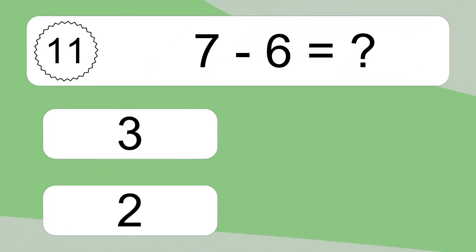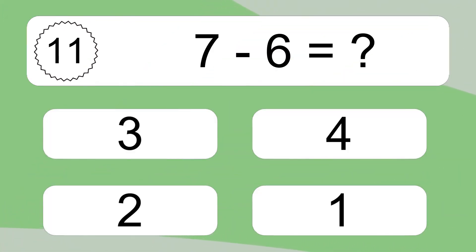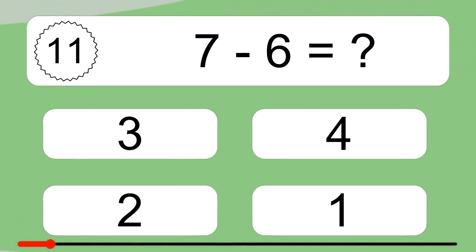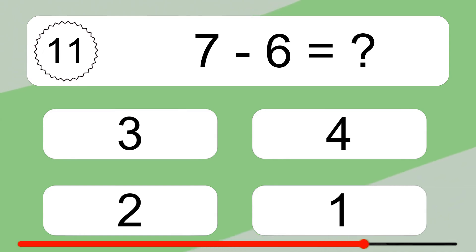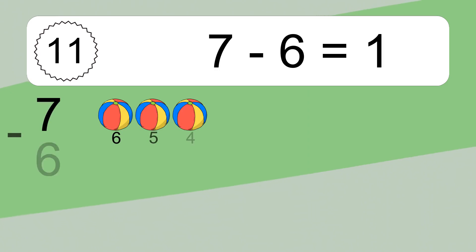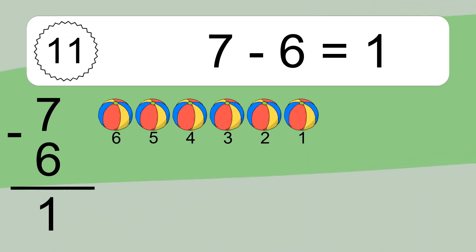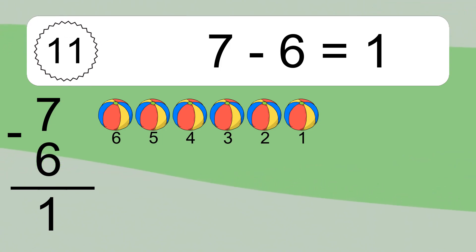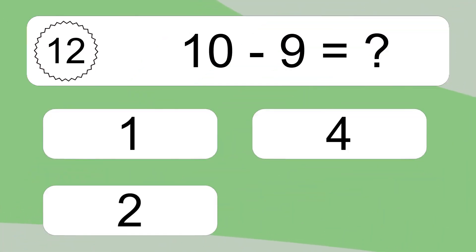7 minus 6 equals what? 7 minus 6 equals 1. Let's count it: 6, 5, 4, 3, 2, 1.